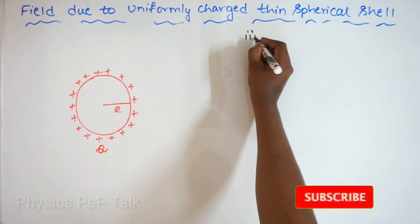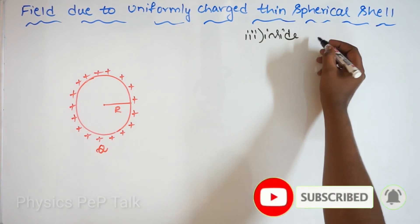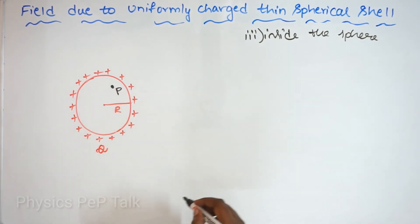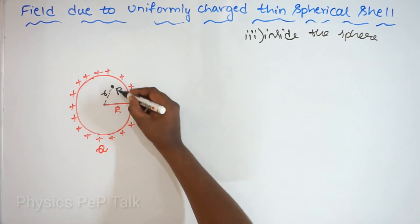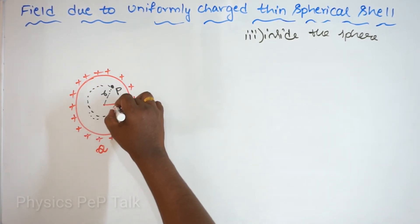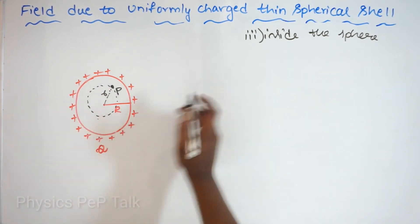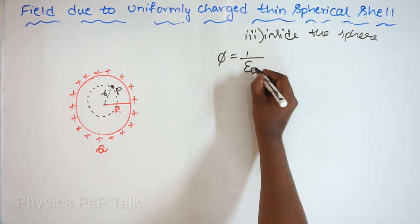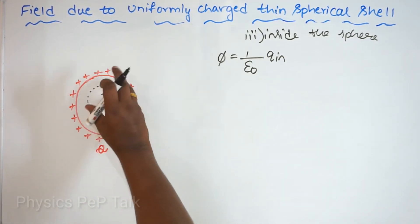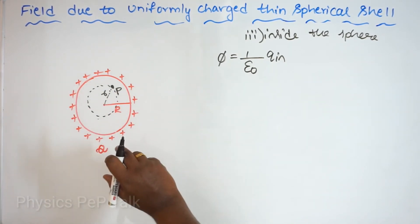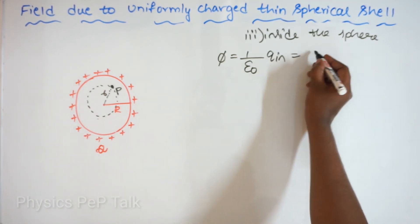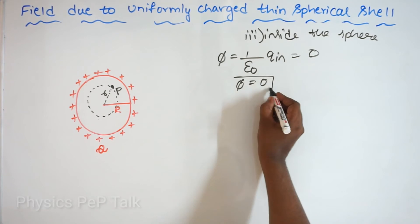Case 3: point P inside the sphere. Let point P be at distance small r inside the shell. Using Gauss's law, I consider a small Gaussian sphere of radius small r inside the hollow sphere. The charge on the Gaussian sphere is 0, because the charge Q resides only on the hollow spherical shell, not inside it. So the flux phi equals 0. I will call this equation 1.